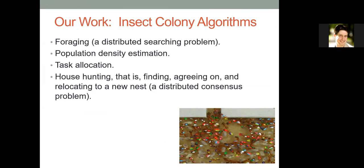But this talk today is actually about insect colony algorithms. We studied the foraging problem — a problem of searching in a distributed system — population density estimation, task allocation, and house hunting. House hunting means a colony finds, agrees on, and relocates to a new nest. So it's basically a geographical distributed consensus problem.